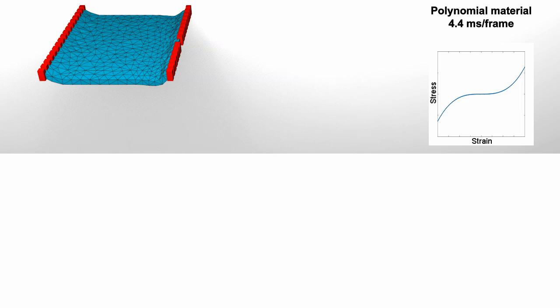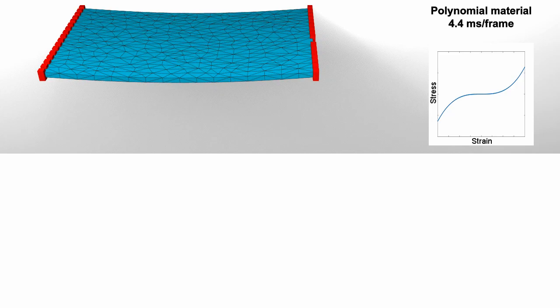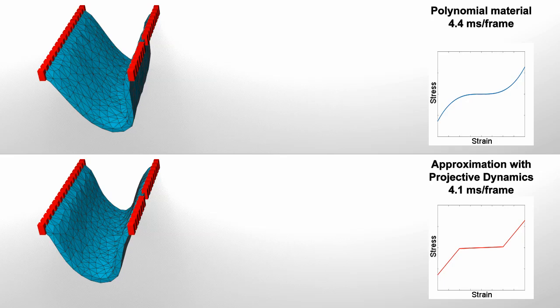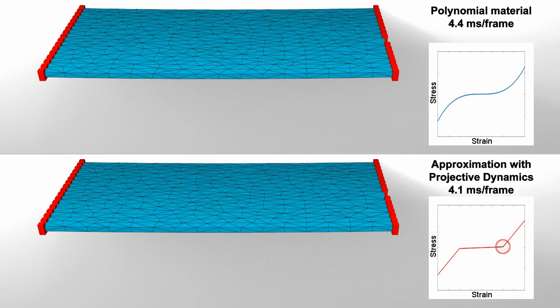Here we see our method applied to a polynomial material. This material can be approximated by projective dynamics using two constraints, which create a piecewise linear approximation. Unfortunately, this approximation introduces artifacts. First, when the object is relaxed, the additional constraints introduce undesired damping. Second, when we exceed a certain extension threshold, the material instantaneously becomes more stiff. Our method avoids both of these problems with minimal computational overhead.